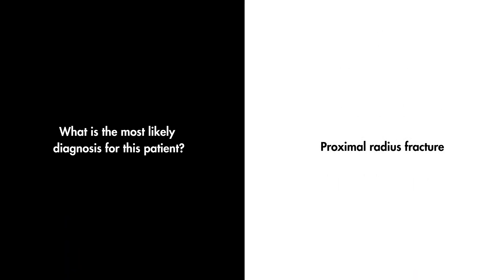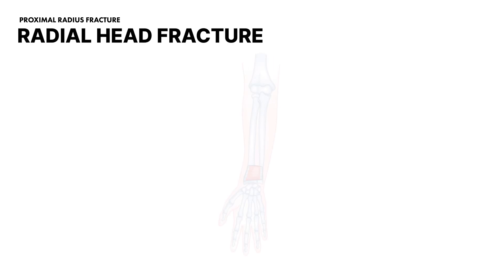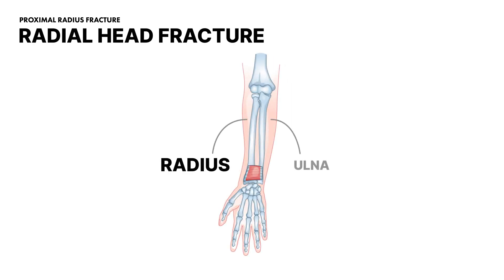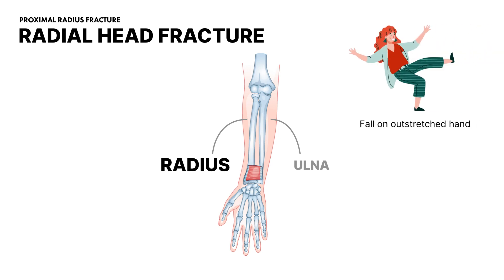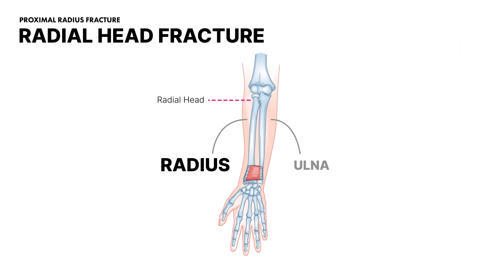The correct answer is a proximal radius fracture, also known as a radial head fracture. This type of injury often occurs from falls onto an outstretched hand, with the force of the fall primarily impacting the radial head. This results in pain localized at the elbow's lateral aspect, swelling, and difficulty with pronating and supinating the forearm.